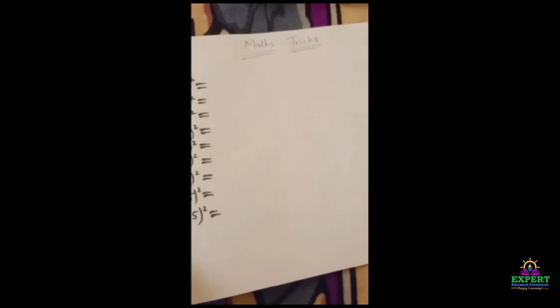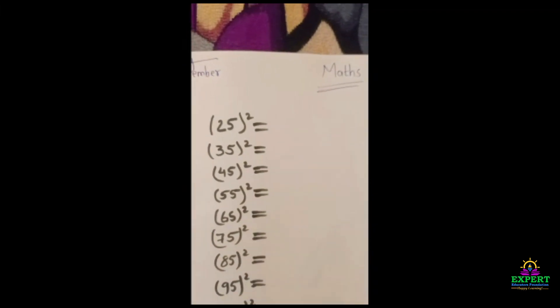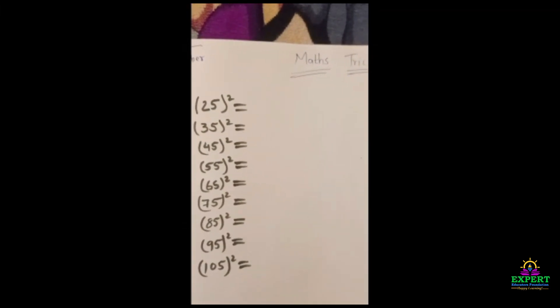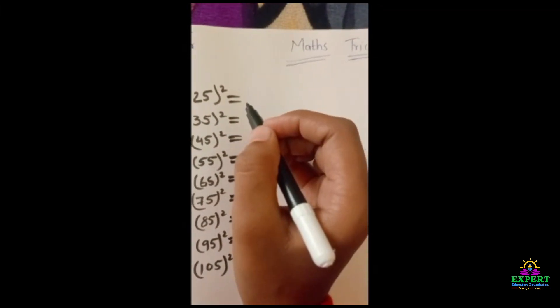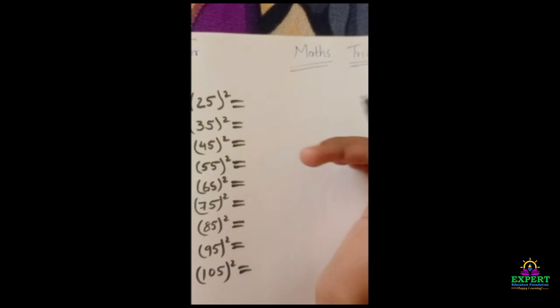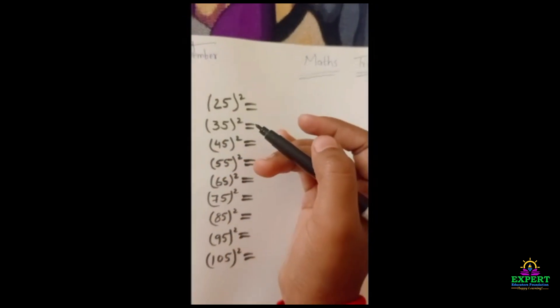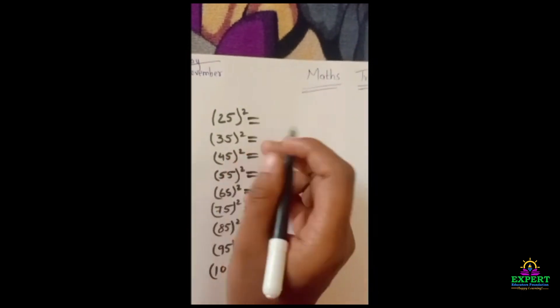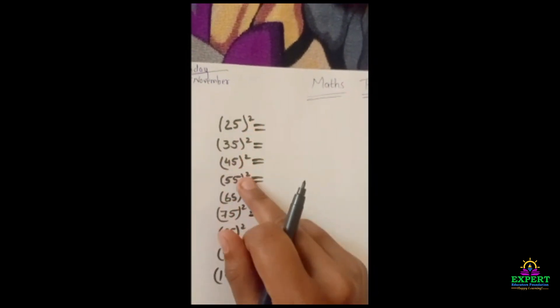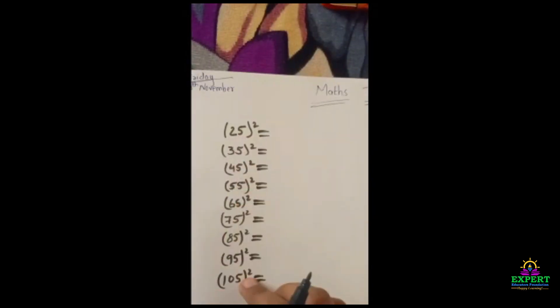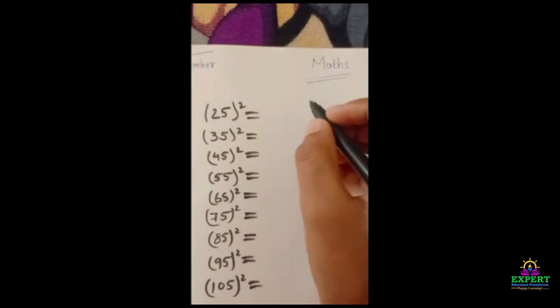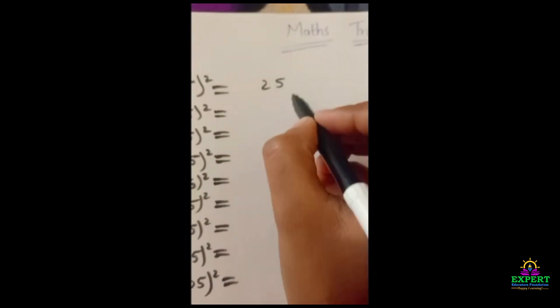Now we have to solve it. Here we have to find a square. Now I am going to tell you the simple tricks of finding square. You will see all these numbers have the ending number as 5, so we will write here 25, 25, 25, because every number is having ending 5.